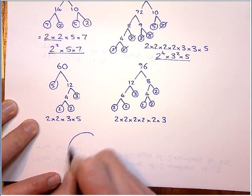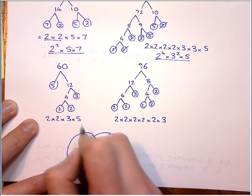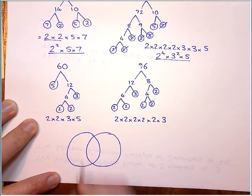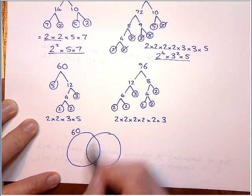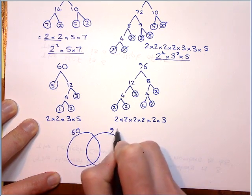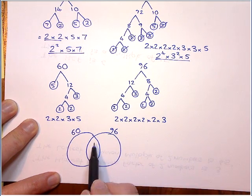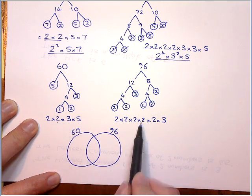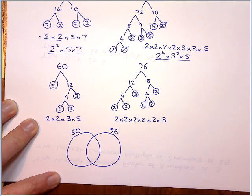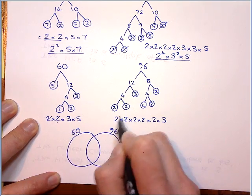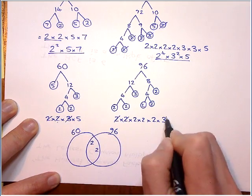And I like to do this using what we call a Venn diagram. So I'm going to use this first circle on the left, and that's going to allow me to represent the number 60. And this circle on the right is going to represent number 96. Now, the highest common factor is what is common to both. Well, it's this bit here. What is common to both of these two numbers? Well, they both have two 2s, so I can put those in there. And they both have a 3, so I can put that in there.